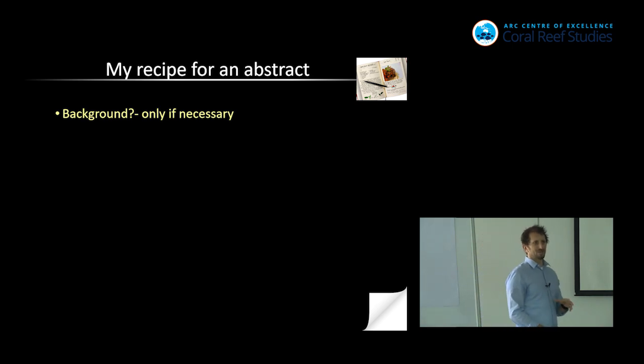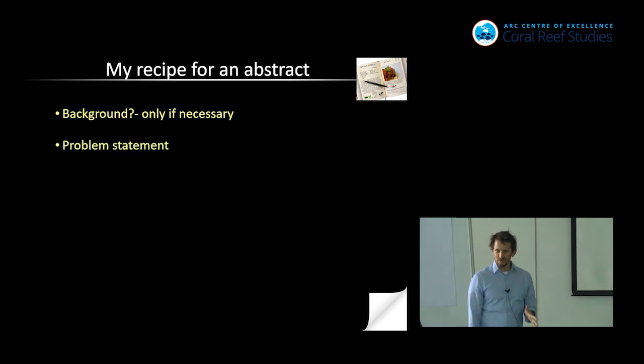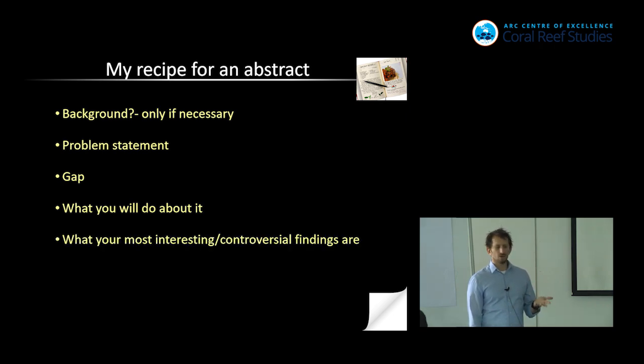So, I'll give you guys my recipe for doing an abstract. And it begins, you know, the background, well, maybe. Is the background really necessary? Sometimes it is. I showed you one where I did the background, but it's not always necessary. Sometimes you can get right into the problem statement in the first sentence, and that's going to be more powerful. So the second bit would be the problem statement. The third bit would be the gap. The fourth is what you'll do about it. The fifth is what your most interesting or controversial findings are. And then what it all means. These are all the bits that should be in an abstract.